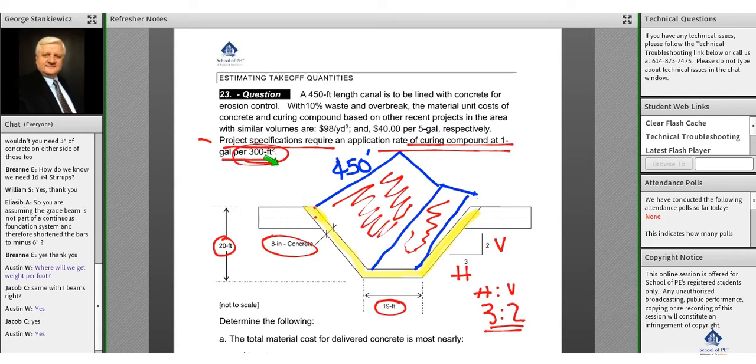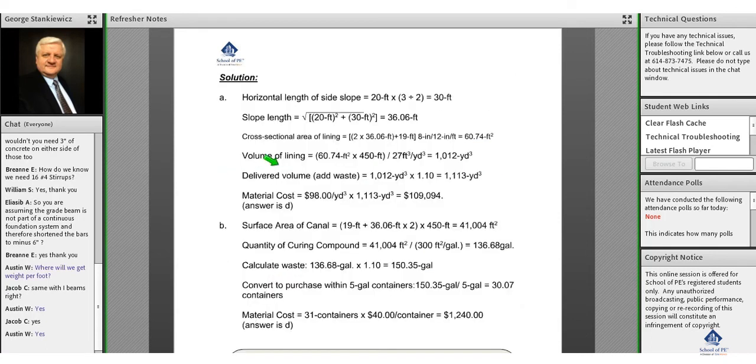We're going to look for the cost for the concrete and the cost for the curing compound, so we have to do some geometry. This is our trapezoidal shape, so we want to know the geometry of the shape.